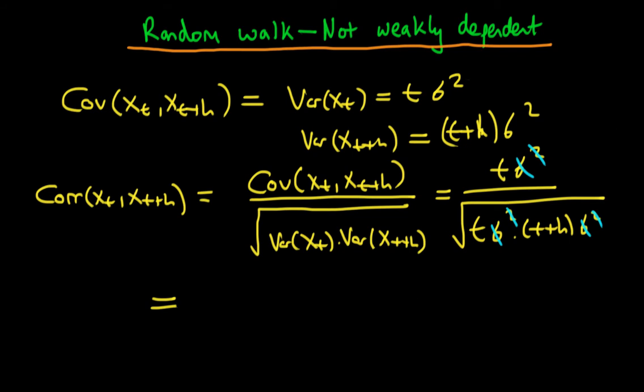We have that the covariance of xt with xt plus h is equal to t divided through by the square root of t times t plus h, which we can actually write a little bit neater if we cancel a power of t with t to the half. So this is equal to the square root of t divided through by t plus h.